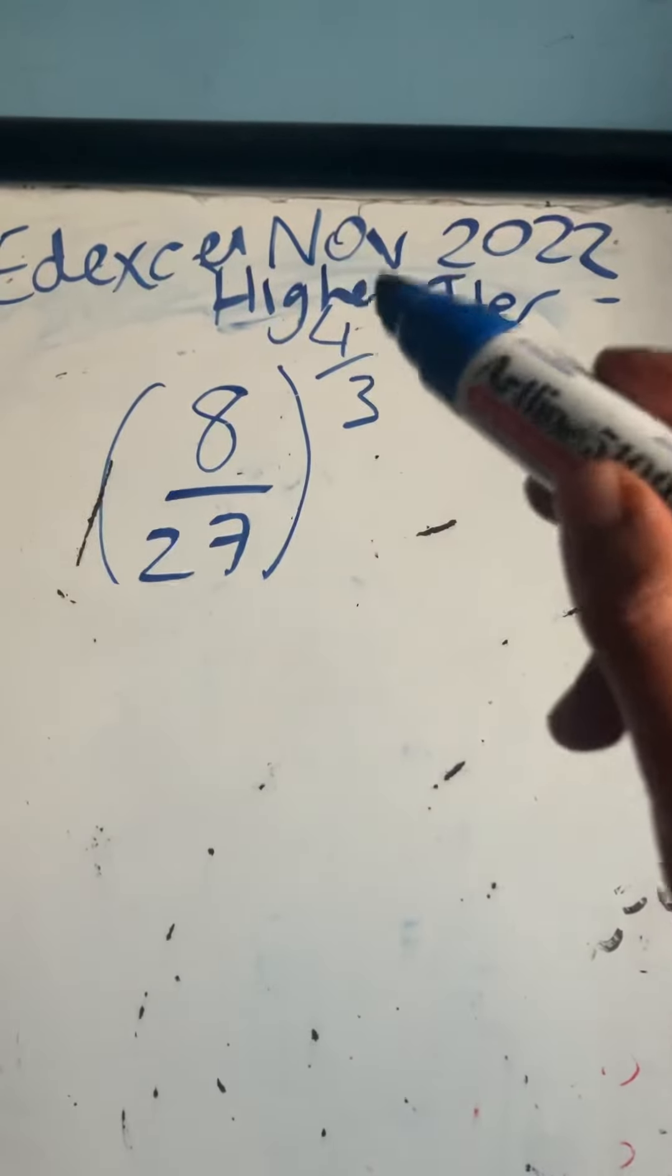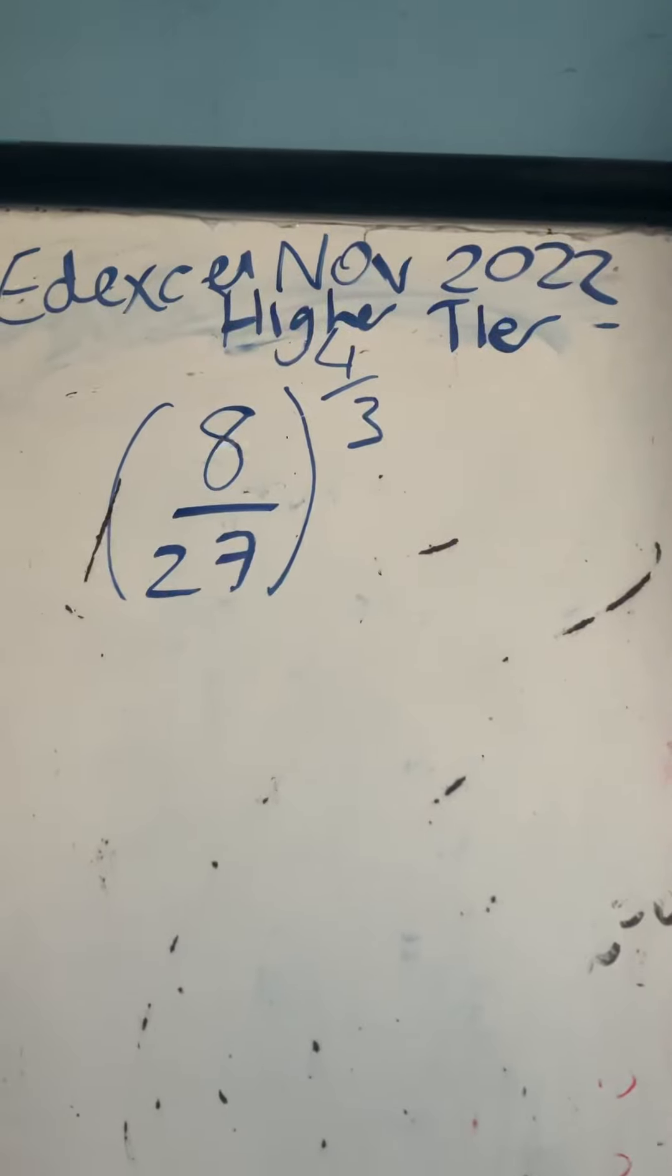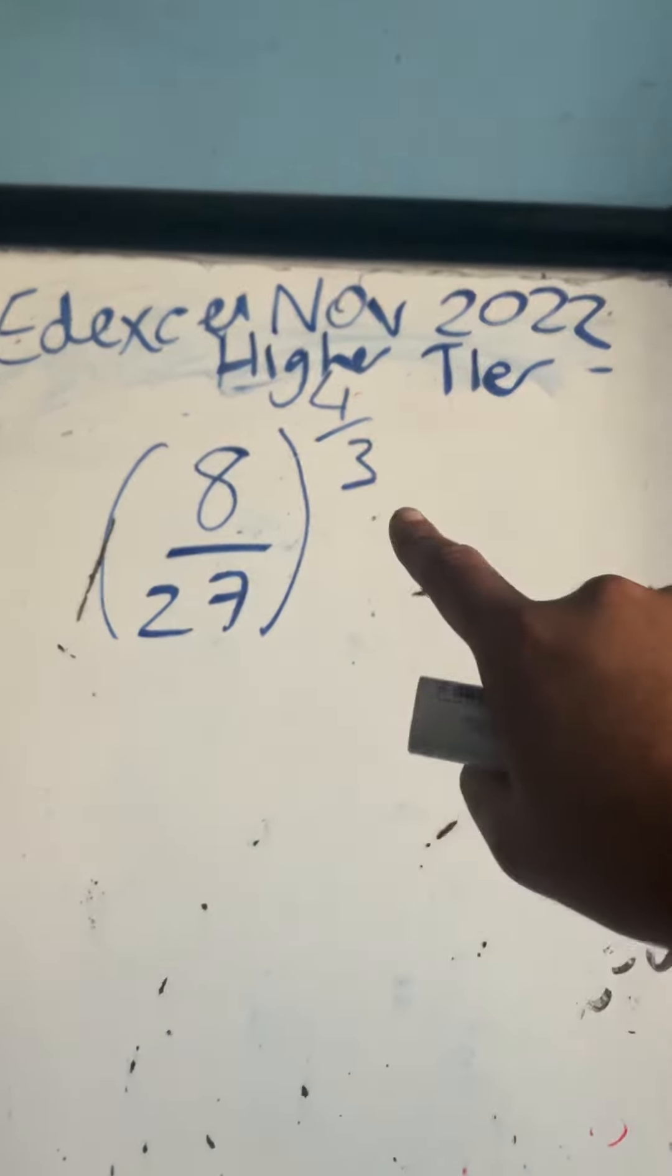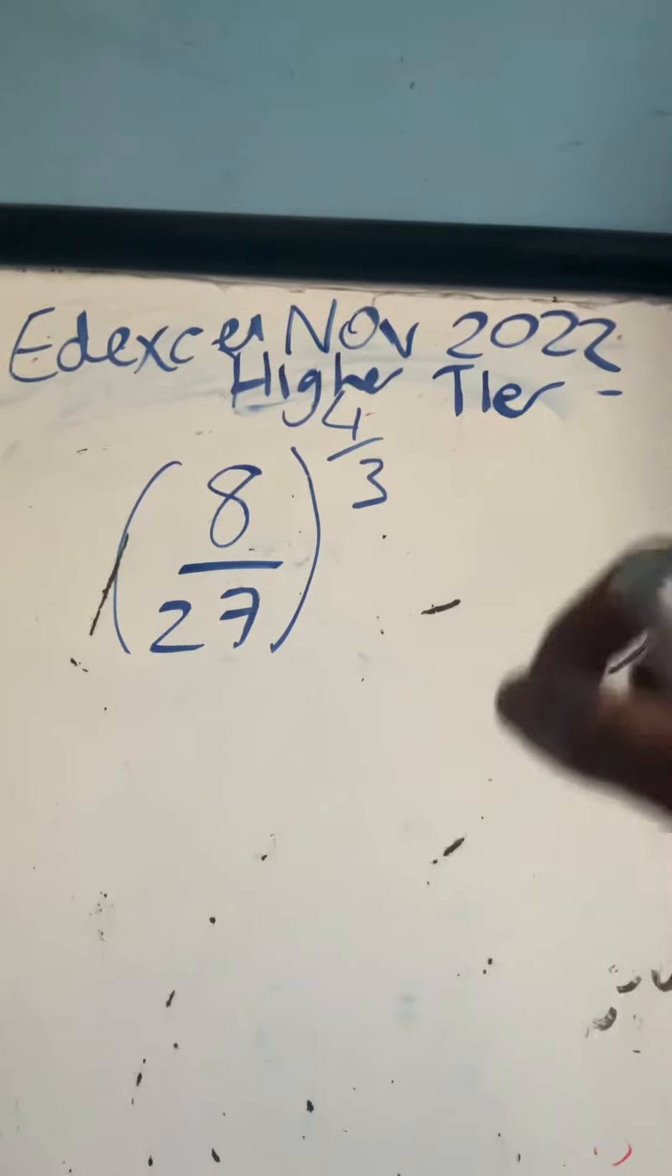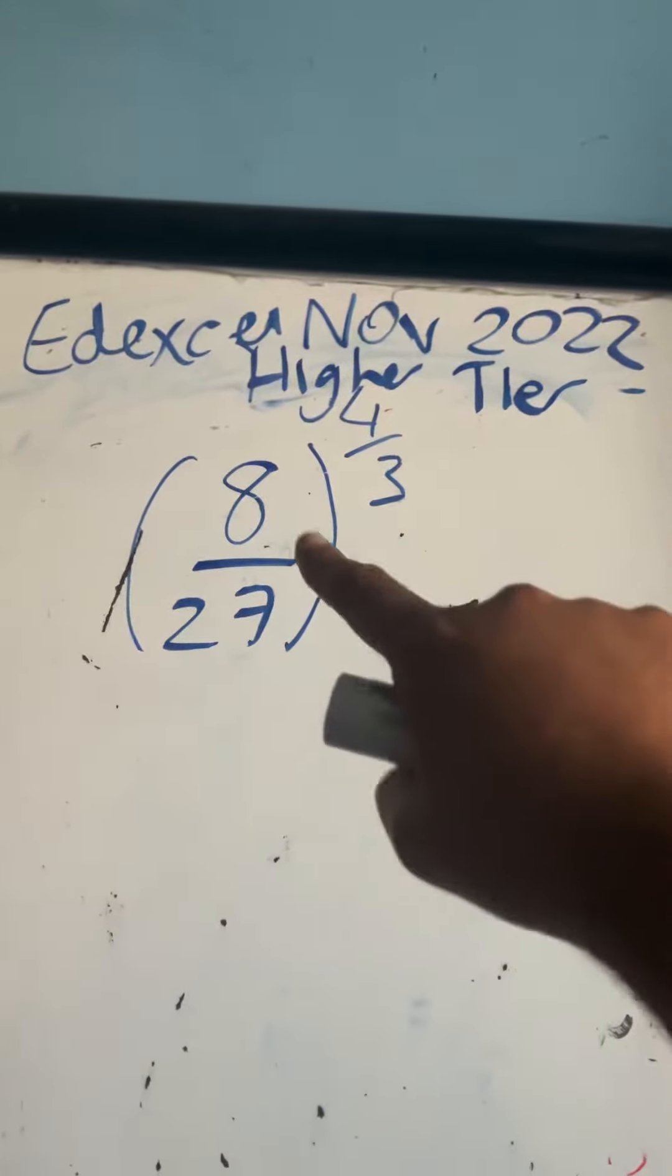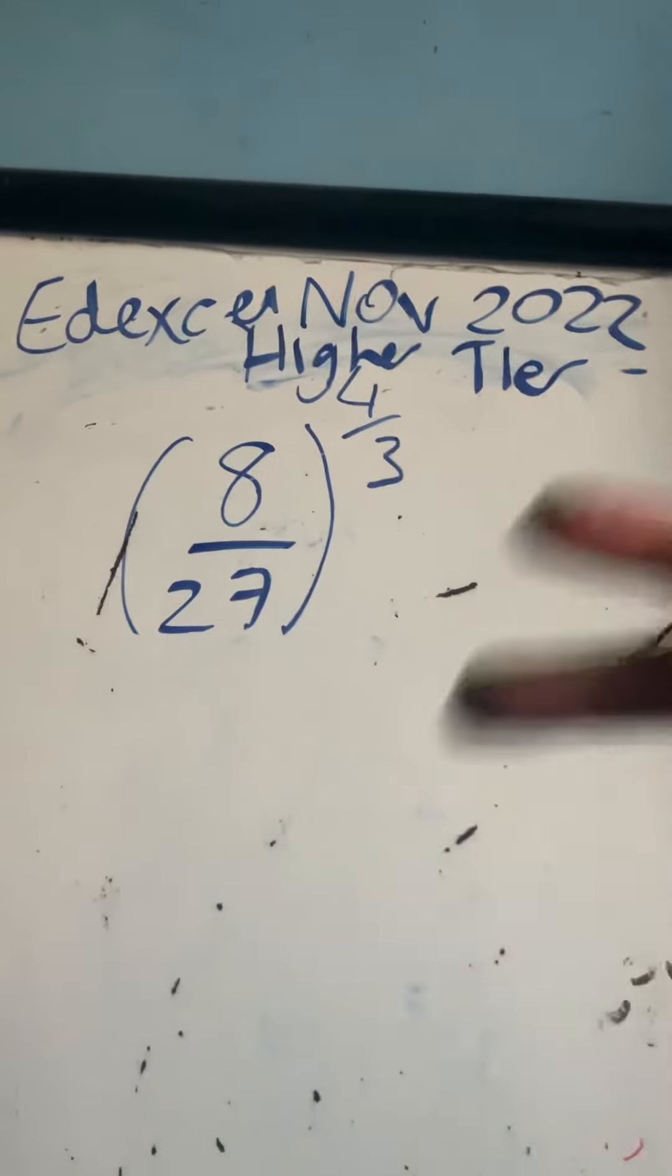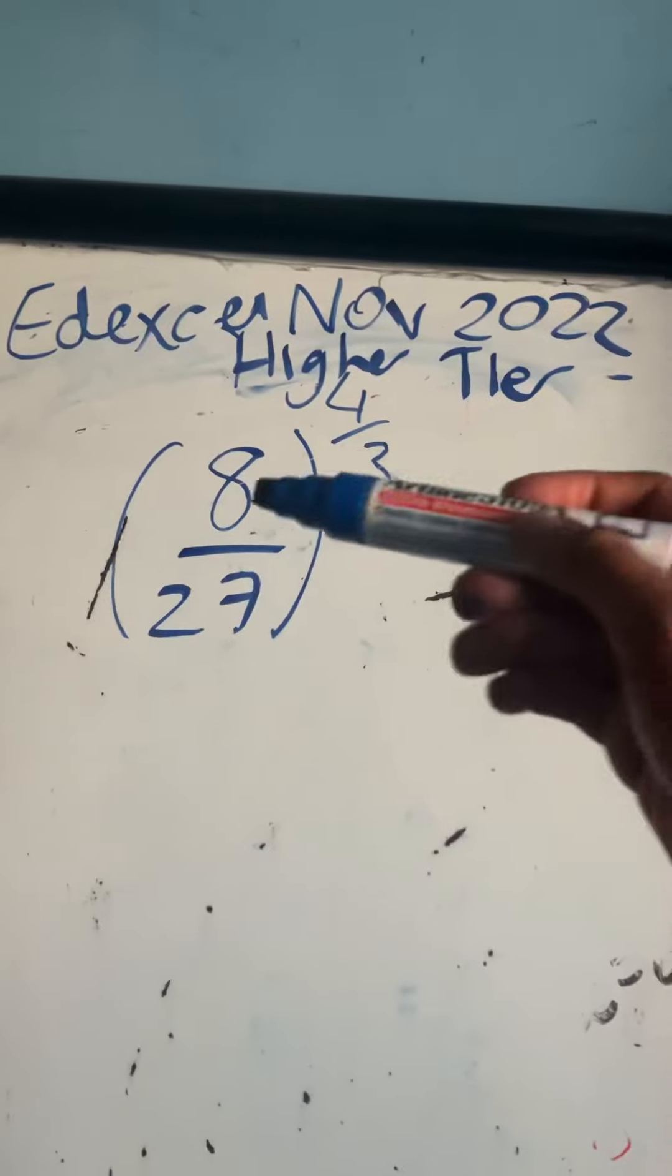This is a fractional index. What does this mean? The denominator tells me what root I take, and the numerator means what power I raise it to after I've taken my root. So I'm taking the cube root and raising it to the power of 4.